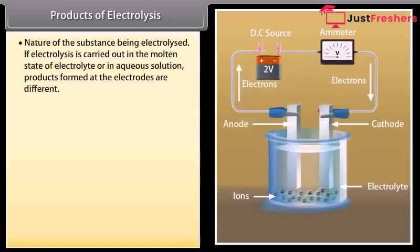Products of electrolysis. Products of electrolysis depend mainly upon the following factors: Nature of the substance being electrolyzed. If electrolysis is carried out in the molten state of electrolyte or in aqueous solution, products formed at the electrodes are different.